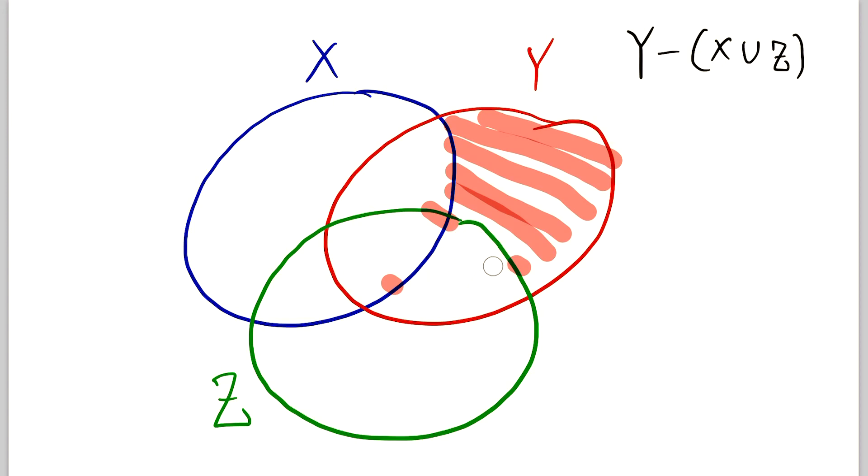So just make sure I can erase all of this without messing up my sets. And there we go. So now we've shaded everything that's in Y and taken out everything that's in X union Z. So what we have left is Y minus X union Z. But that's really all there is to it.